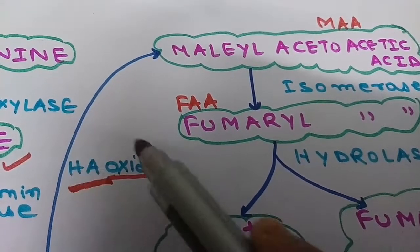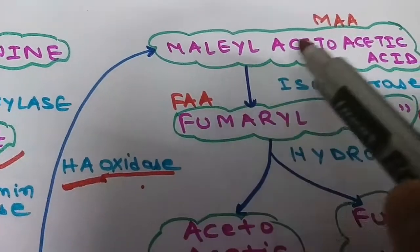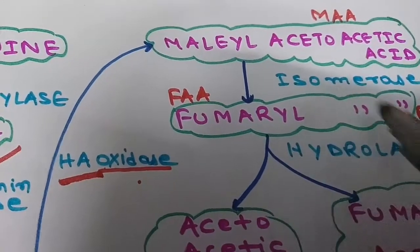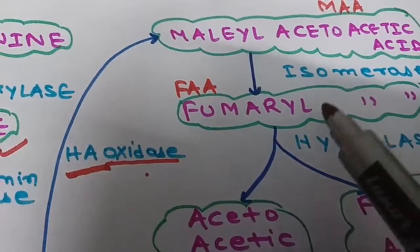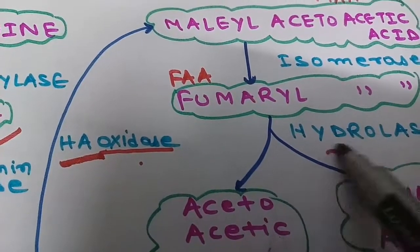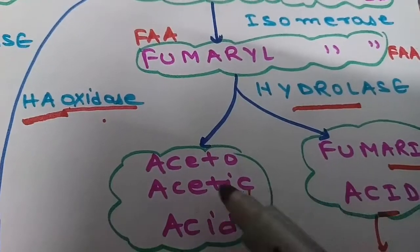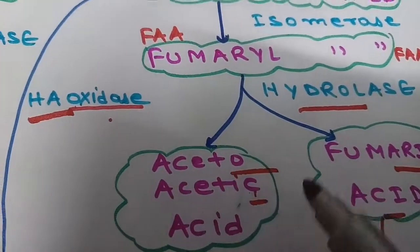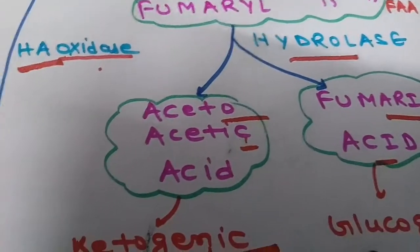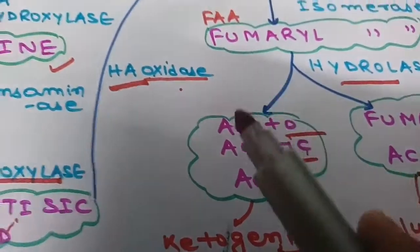After this, homogentisic acid will form maleylacetoacetic acid by the enzyme homogentisic acid oxidase. This will then isomerize to fumarylacetoacetic acid by an isomerase enzyme. Fumarylacetoacetic acid will undergo hydrolysis by a hydrolase to form acetoacetic acid and fumaric acid. Acetoacetic acid will go into the ketogenic pathway, and fumaric acid will go into the glucogenic pathway. This was the metabolism of phenylalanine.